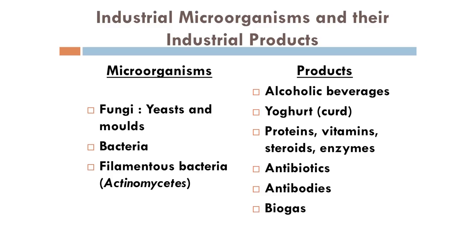Next we will look at the industrial applications — how various microorganisms can be utilized for producing industrial products. The microorganisms that we can use are fungi, bacteria, and actinomycetes which is a filamentous bacteria, and we can prepare products such as alcoholic beverages, yogurt, proteins, vitamins, antibiotics, antibodies and biogas.